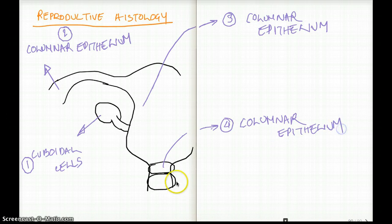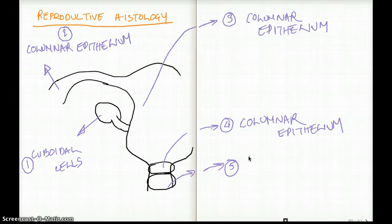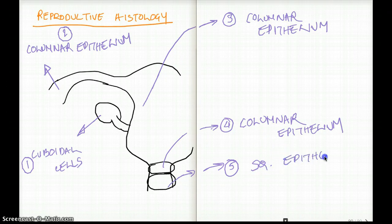What about ectocervix? What about ectocervix? Now this is where we probe, we see, we open up to get a picture of our cervix whenever we do a pelvic exam. So this is where the cell starts to become a little bit different so that they can take a little bit more pressure. And that's why the columnar will finally change into squamous epithelium at our ectocervix.